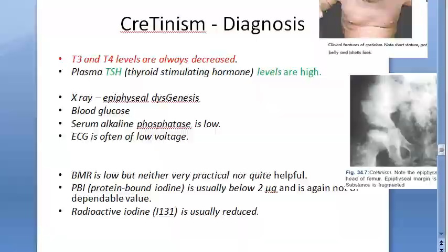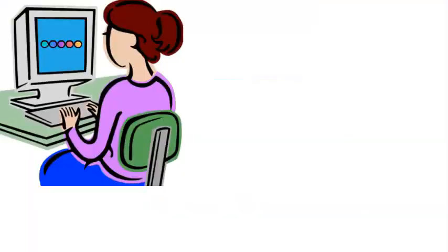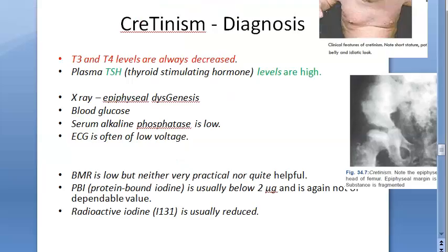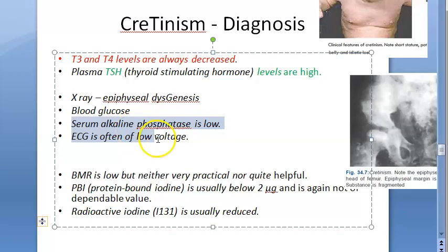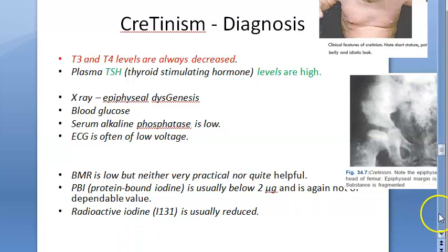To summarize diagnosis: T3 and T4 are low, TSH is high. Alkaline phosphatase is low, ECG is low voltage, BMR is low, PBI is low, radioactive iodine is reduced. X-ray shows epiphyseal dysgenesis and delayed bone age. Serum carotene and cholesterol are elevated.